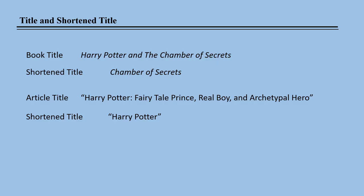Titles and shortened titles: book titles are italicized; article titles are enclosed in quotation marks. Full titles should be used the first time that an item is cited in a footnote, but shortened titles can be used in second and subsequent citations. The short title contains the keyword or keywords from the main title. An initial 'A' or 'The' is usually omitted.